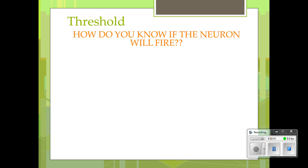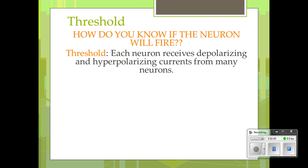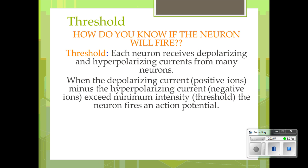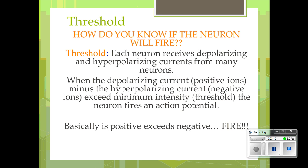How do you know when a neuron will fire? It needs to cross what's known as a threshold. Each neuron receives depolarization and hyperpolarization input from many neurons. When the depolarizing current minus the hyperpolarizing current exceeds the minimum intensity — the threshold — the neuron fires an action potential. If the positive sodium ions exceed the negative potassium ones, there will be a firing.